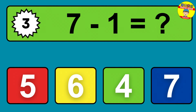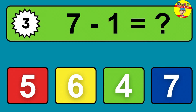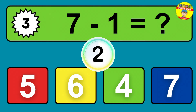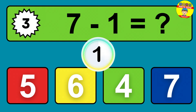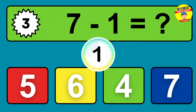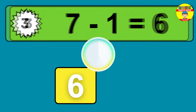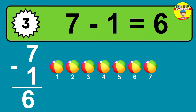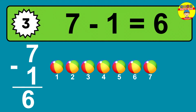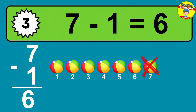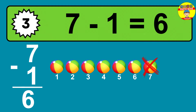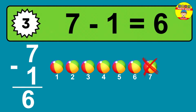Question three: seven minus one equals what? The answer is seven minus one is six. Let's count it: one, two, three, four, five, six.